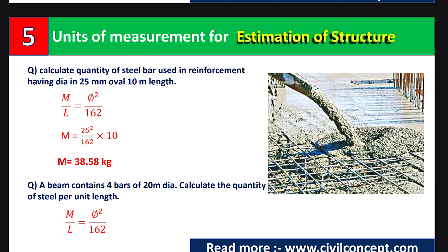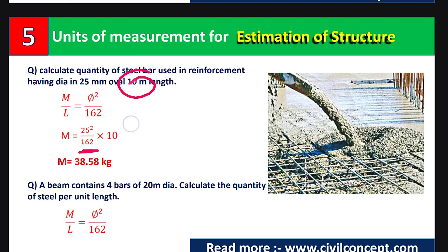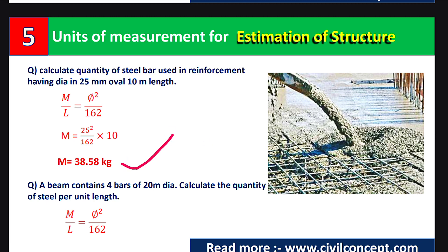Using the formula W = (φ² / 162) × L, with diameter 25 mm and length 10 meters: W = (25² / 162) × 10 = approximately 38.58 kg. This is the weight of the steel rod. In this way we can calculate the quantity of steel bars in the reinforcement using this formula.